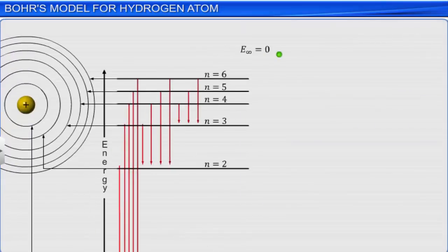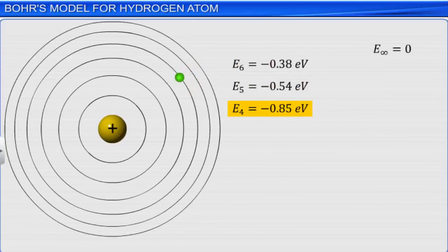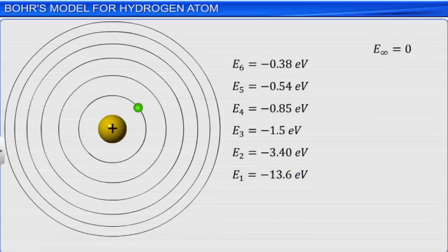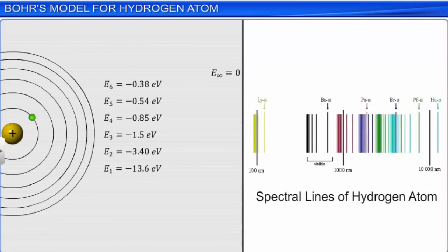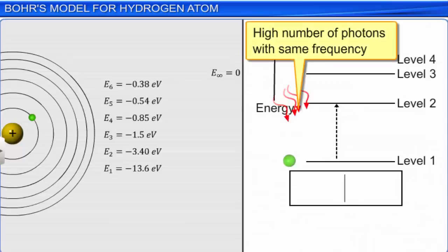Bohr's model also shows that the intensity of each spectral line depends upon the frequency or wavelength of photons absorbed or emitted. Because of the presence of multiple hydrogen atoms, a large number of spectral lines are observed. The frequency associated with the absorption and emission of the photon can be calculated using the equation ΔE divided by h, where h is Planck's constant. The wavelength can be calculated by dividing the velocity of light by the frequency of the radiation. The more the number of photons of a particular frequency or wavelength absorbed or emitted, the more the intensity of the associated spectral line.